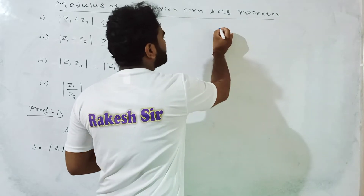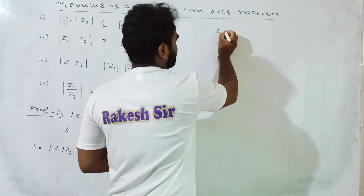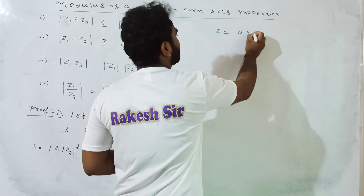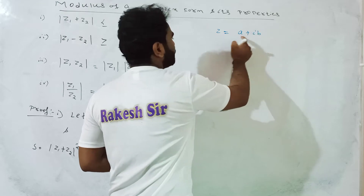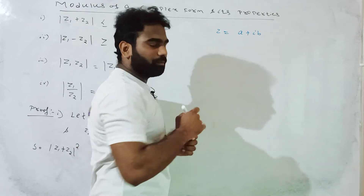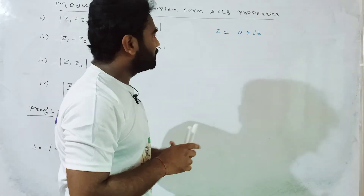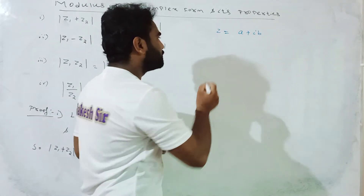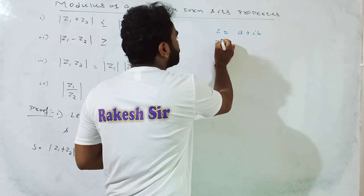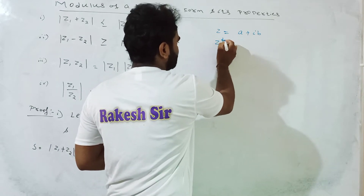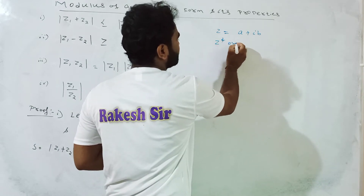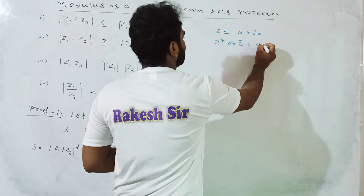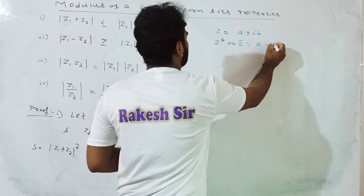This is a complex number represented as z = a + ib, where a is the real part and b is the imaginary part. Its complex conjugate, z-star or z-bar, becomes a minus ib.